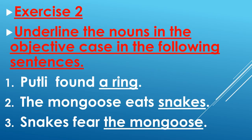Now your second exercise is: underline the nouns in the objective case in the following sentences. Just to remind you, nouns which are objects in the sentence are in objective case. The first sentence is: Putli found a ring. A ring is the object in the sentence, so it is in objective case.